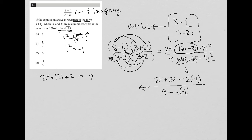I'd have 24 plus 13i plus 2, which is the same as 26 plus 13i. And on the bottom, I'd have 9 plus 4, which is the same as 13.